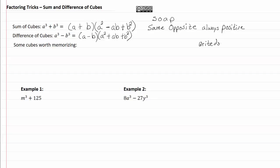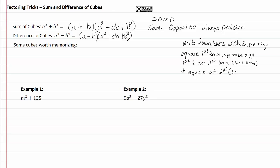Write down bases with same sign. Then we take and square first term, opposite sign. Take first times second term, or you can think of it as the last term if you want, plus the square of second or last term and you're done.